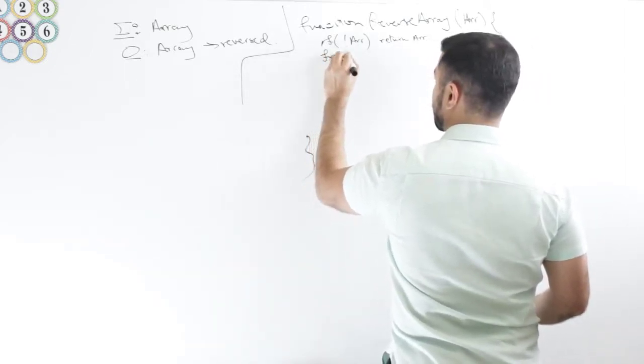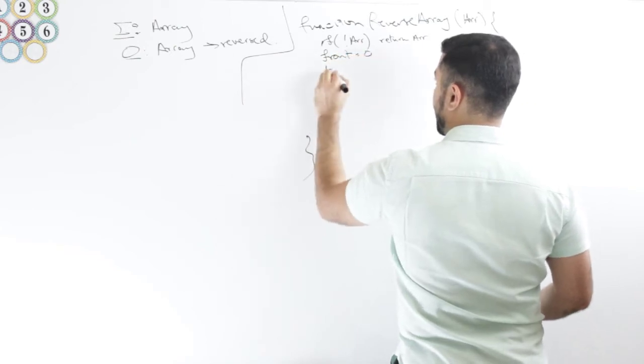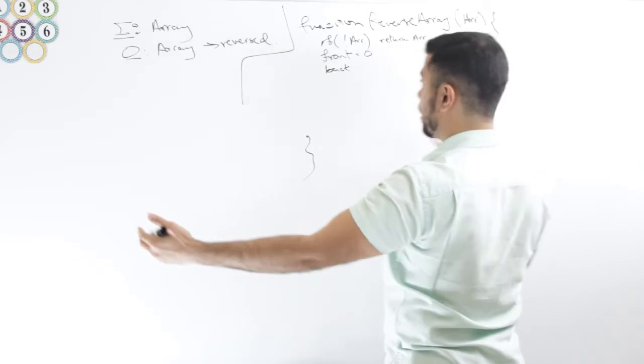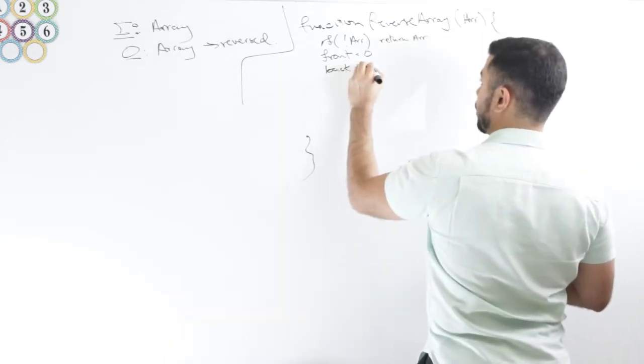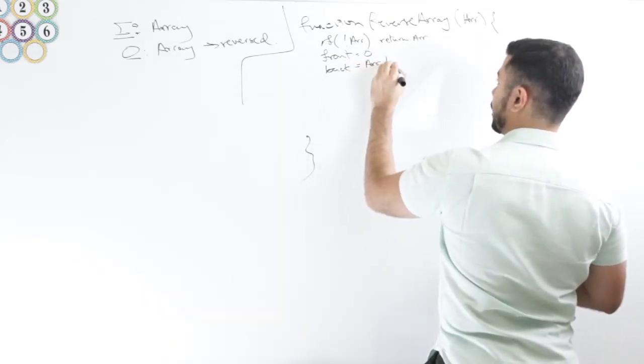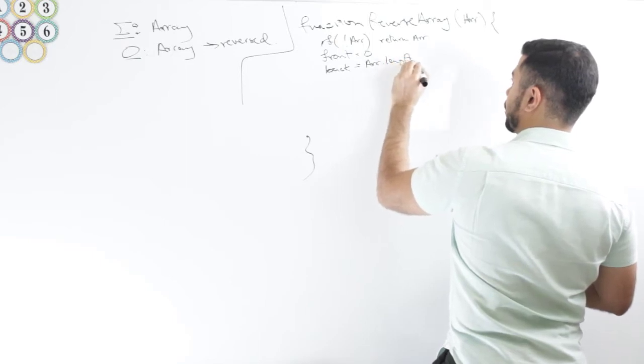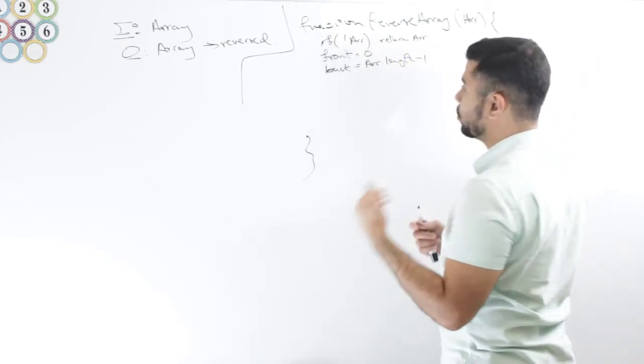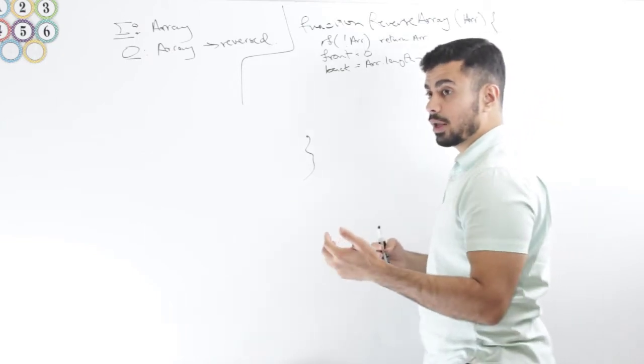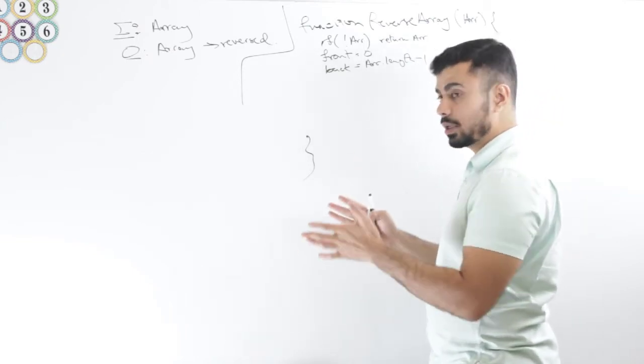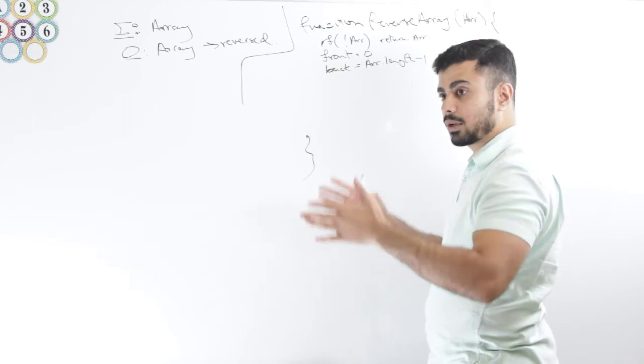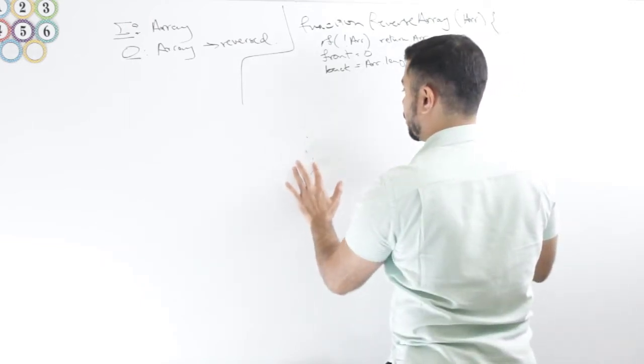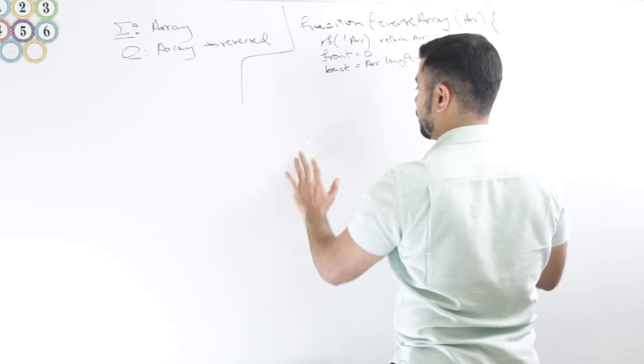I will say front equals zero and back. Front is basically the first index, and back is then array dot length minus one. So what I can do is have a while loop and throughout the time I'm incrementing the front and decrementing back and swapping the elements that way. Let me just erase this.